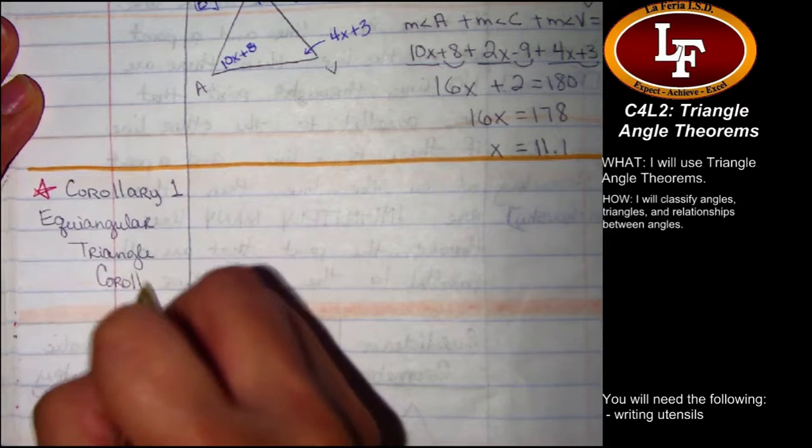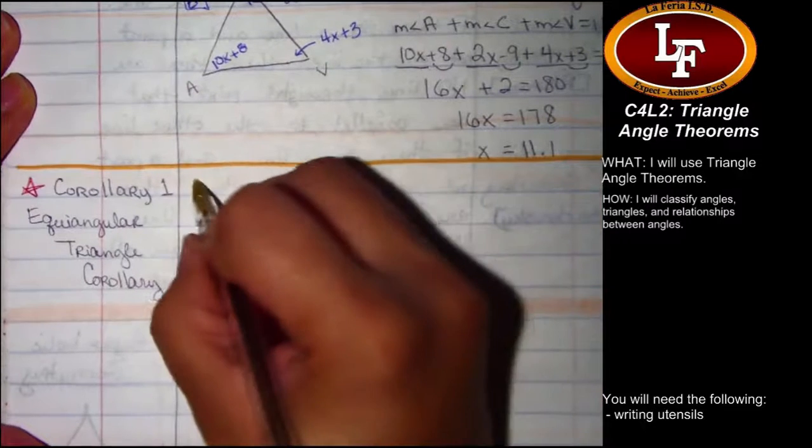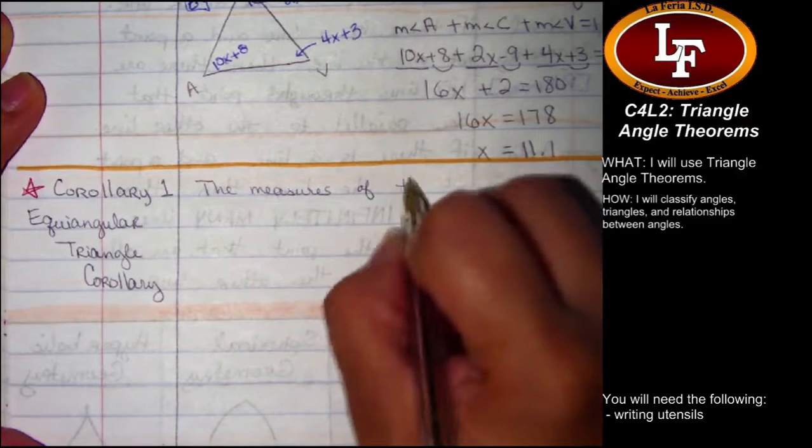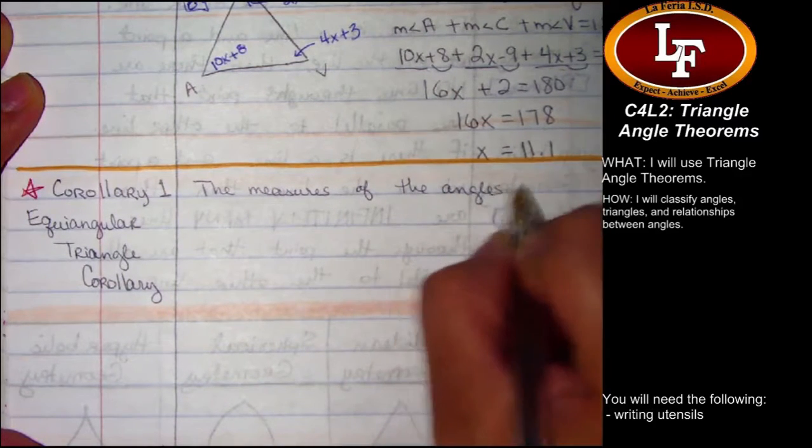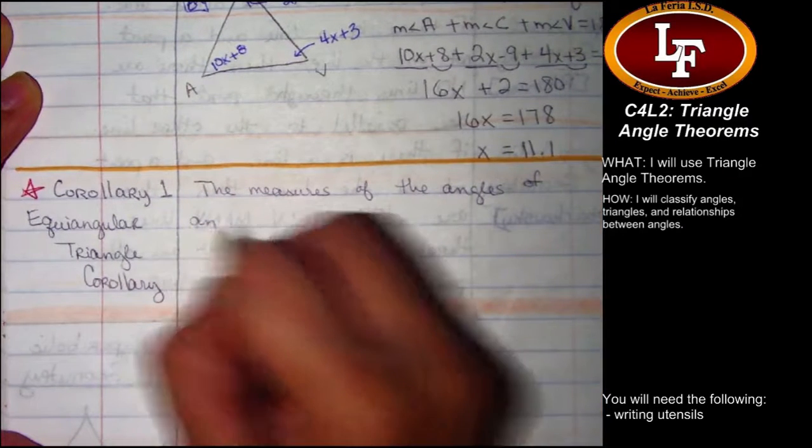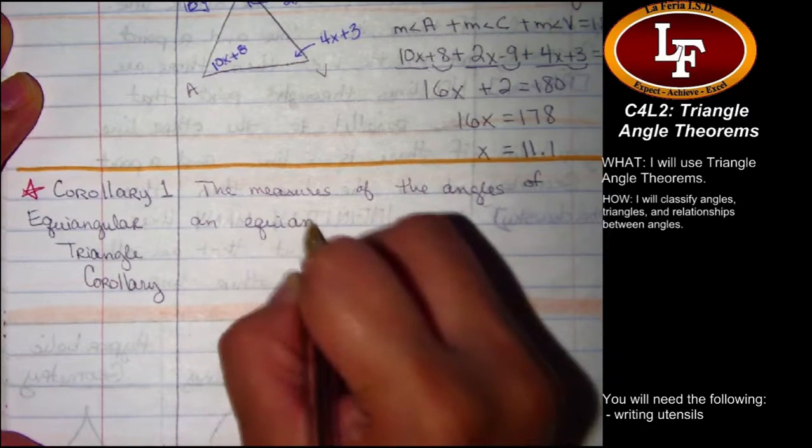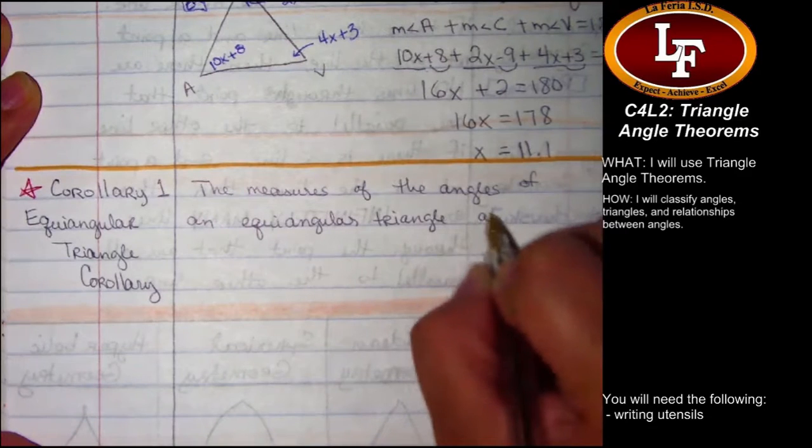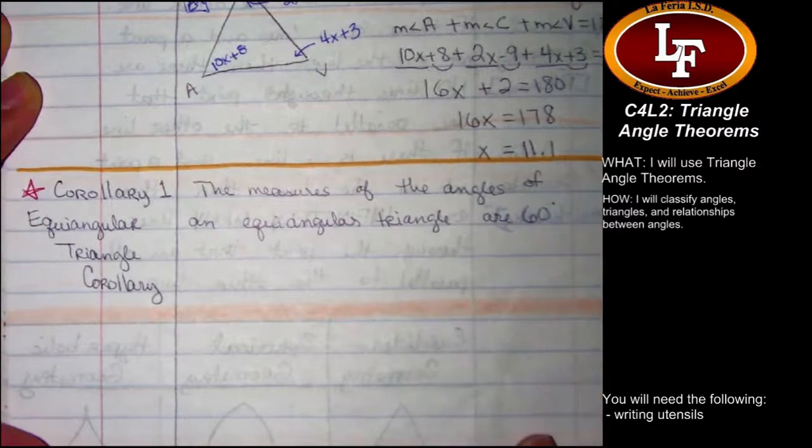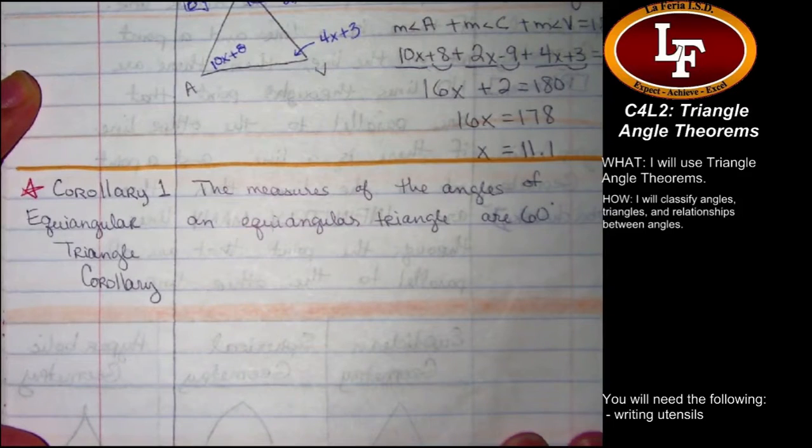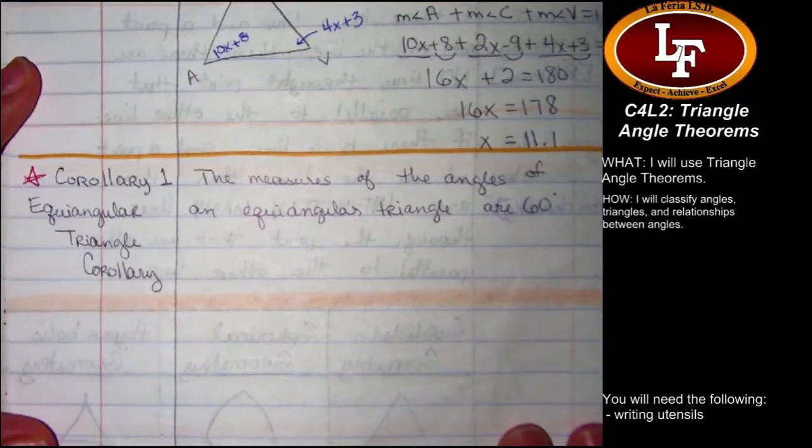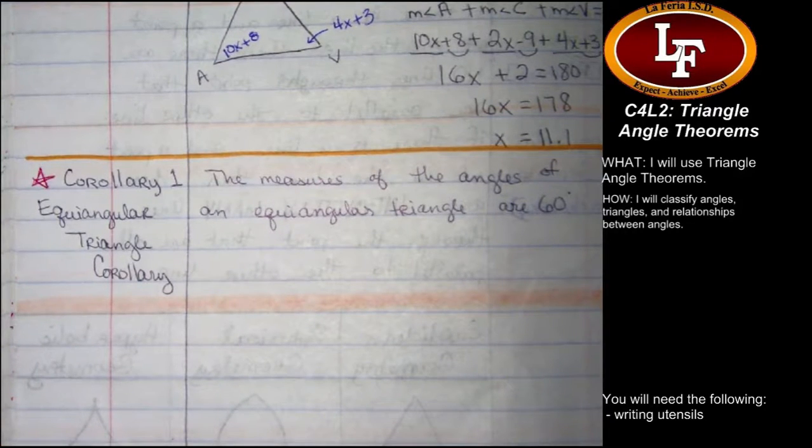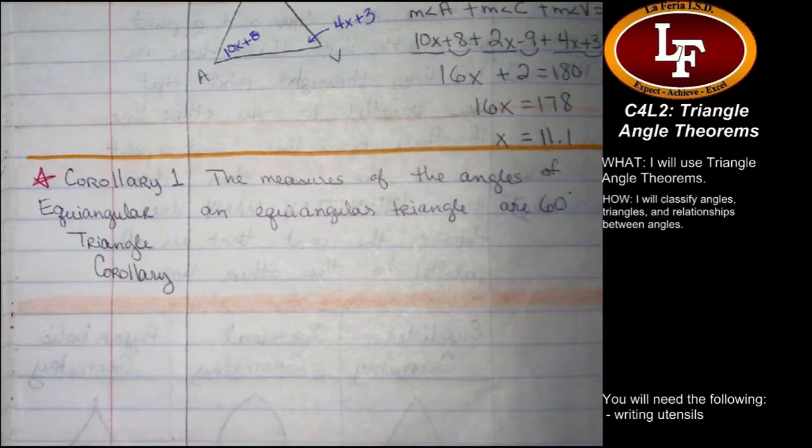So corollary is a statement like that. This first one is the equiangular triangle corollary. We'll go ahead and write the whole name. And it says this. The measures of the angles of an equiangular triangle are 60 degrees. Pretty straightforward. This makes sense, doesn't it? Right? You take all the three angles. They're all the same measure. You add them together. So you get three times whatever one of them is. That equals 180. Divide by three. Poof. It's 60.